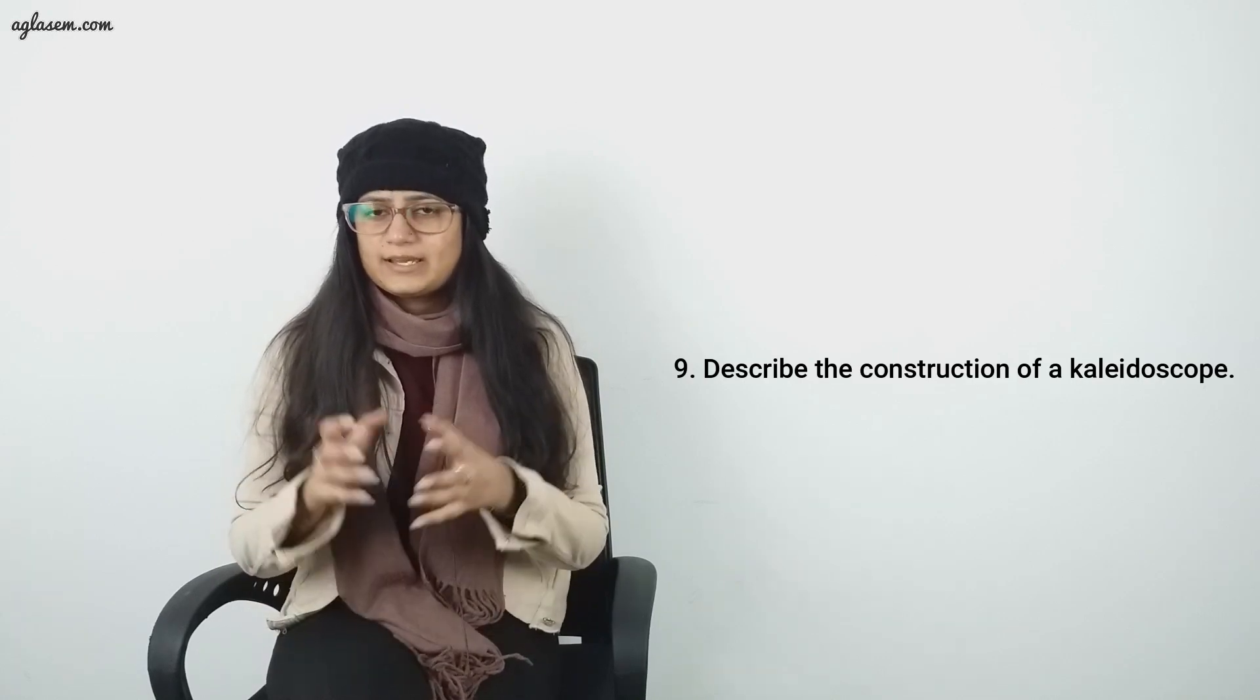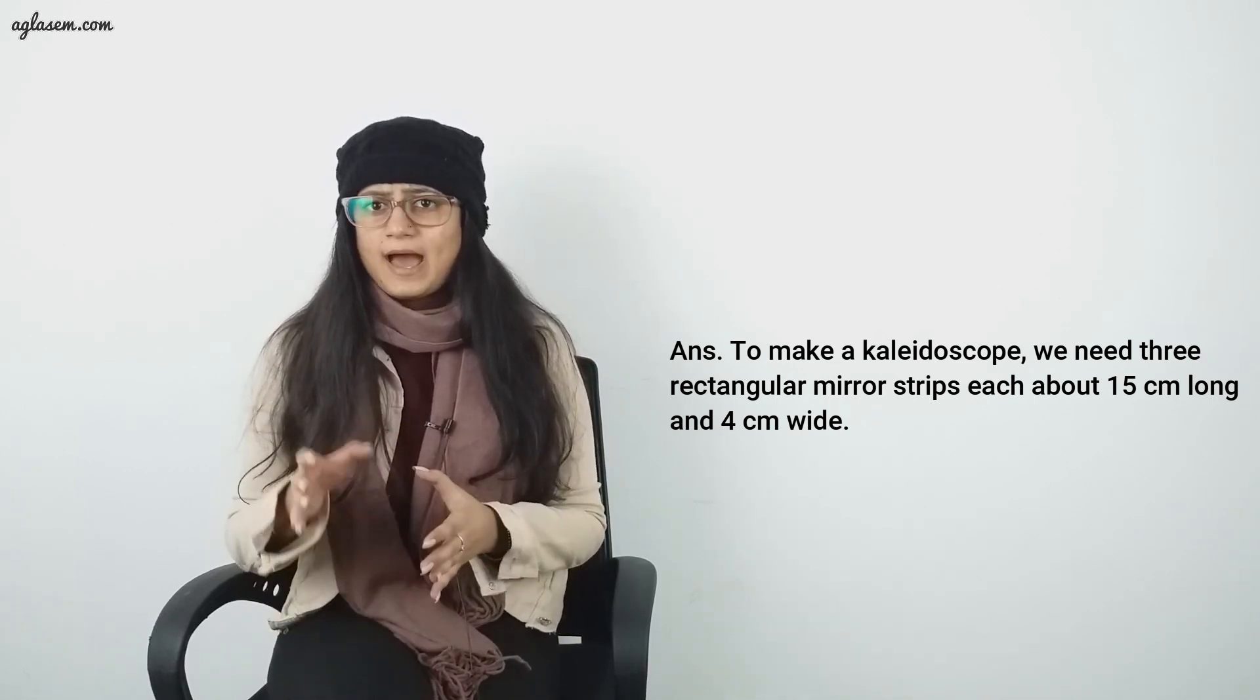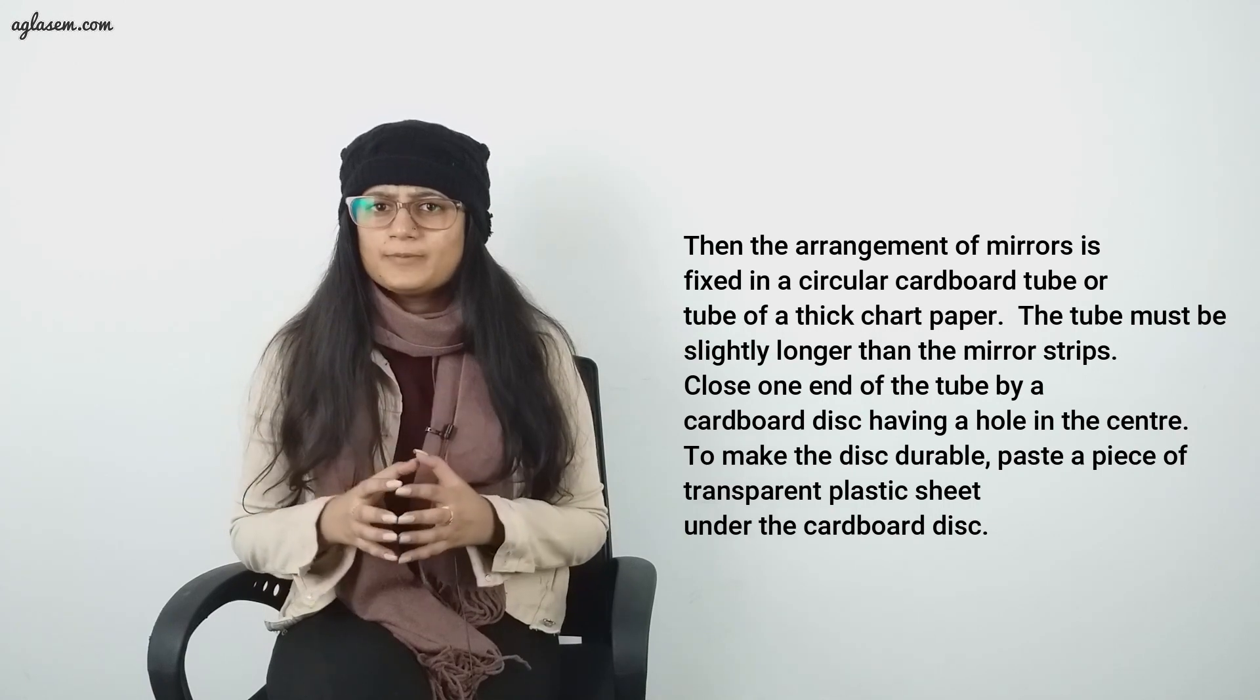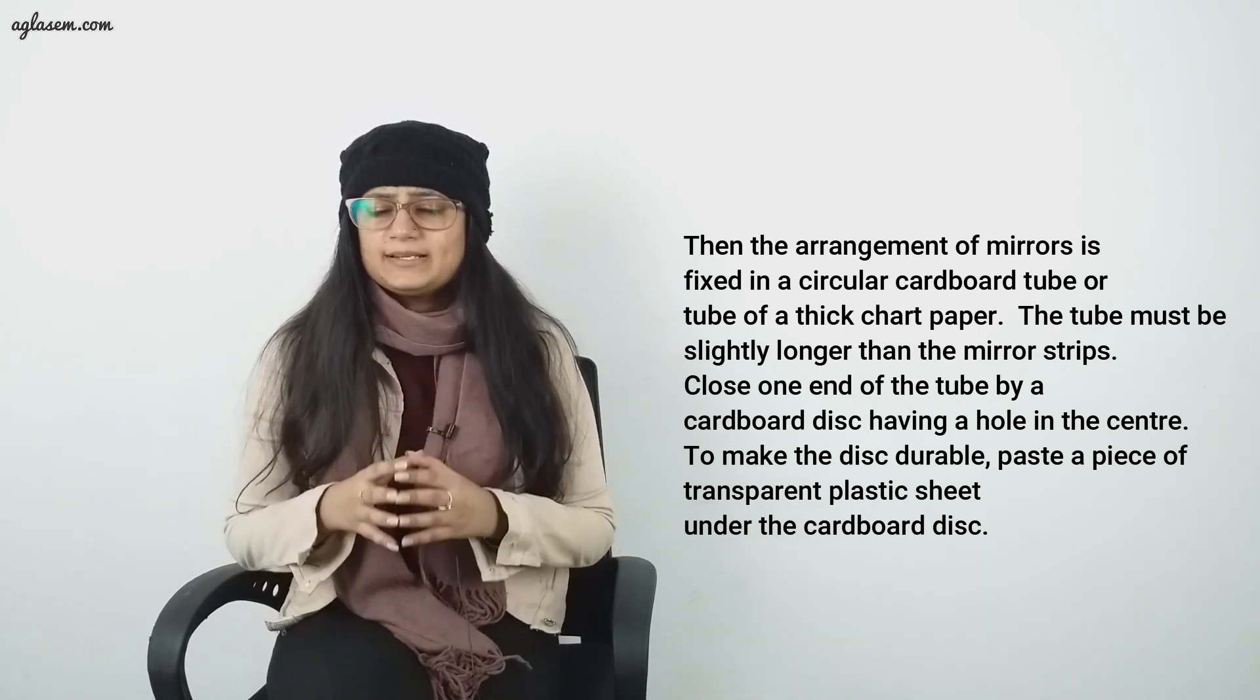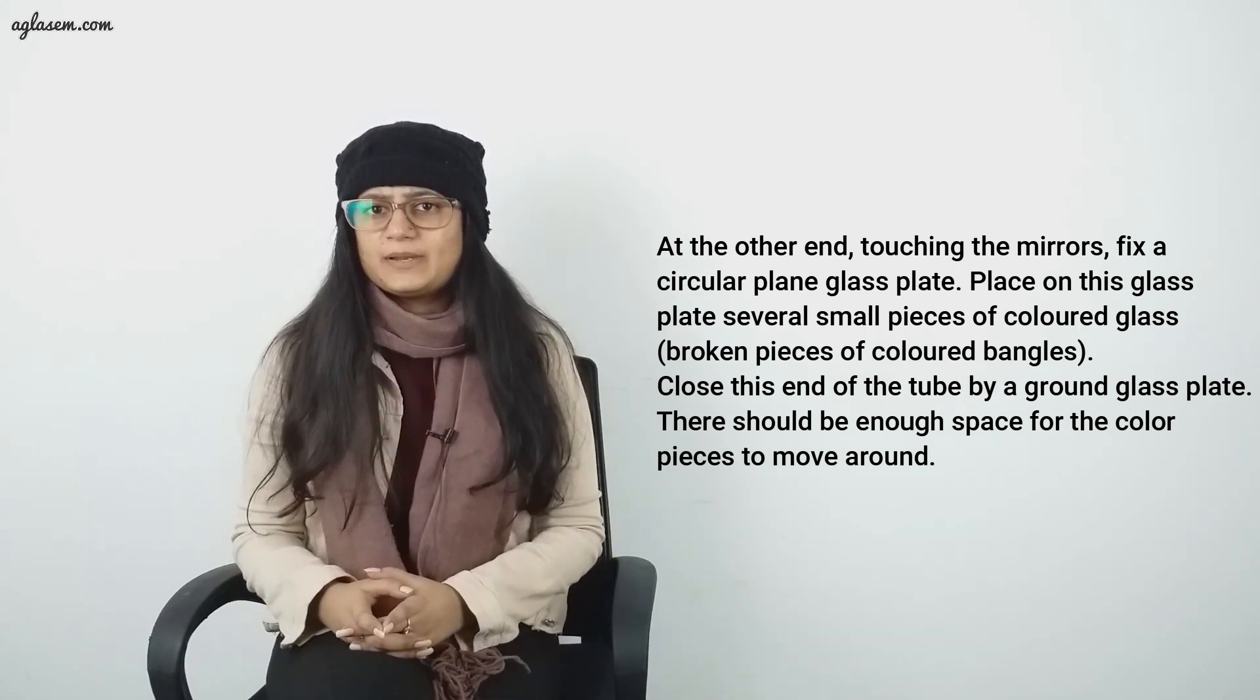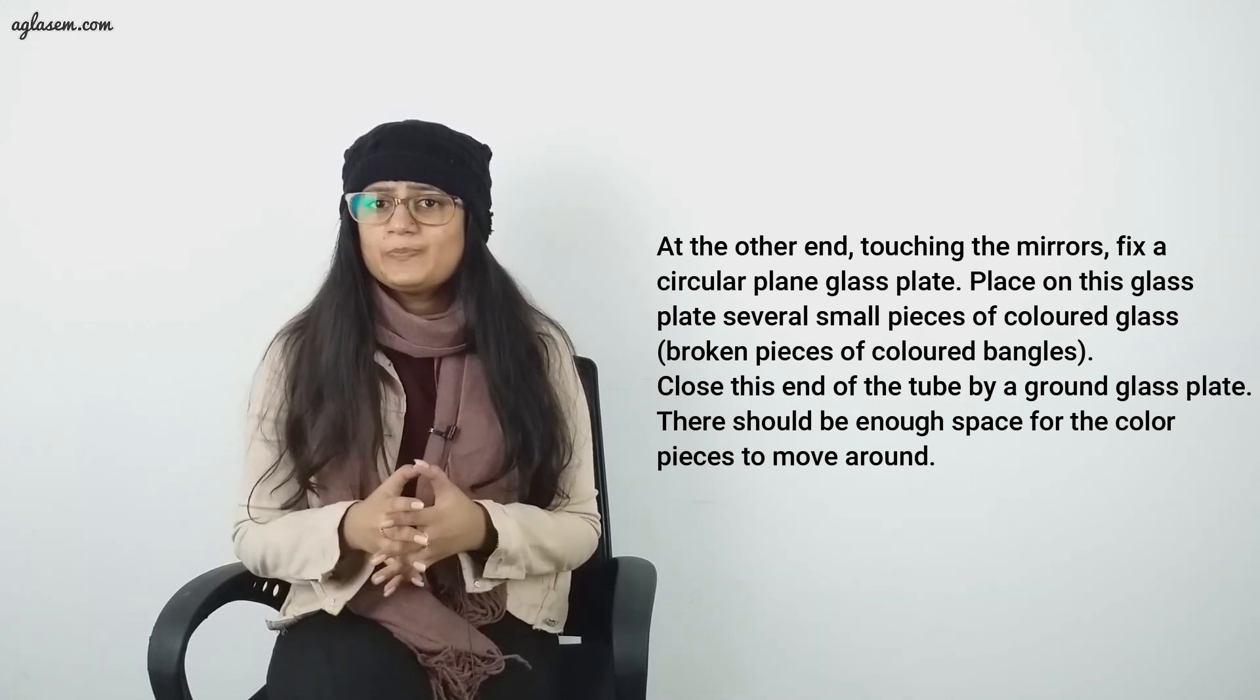Question number 9: Describe the construction of a kaleidoscope. Answer: To make a kaleidoscope, we need three rectangular mirror strips, each about 15 centimeters long and 4 centimeters wide. These are joined together to form a prism as shown on the screen. Then the arrangement of mirrors is fixed in a circular cardboard tube or tube of thick paper. The tube must be slightly longer than the mirror strips. Close one end of the tube by a cardboard disc having a hole in the center. To make the disc durable, paste a piece of transparent plastic sheet under the cardboard disc at the other end touching the mirrors. First, fix a circular plane glass plate. Place on this glass plate several small pieces of colored glass or broken pieces of colored bangles. Close this end of the tube by a ground glass plate. There should be enough space for the colored pieces to move around.